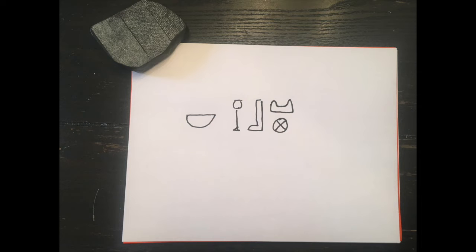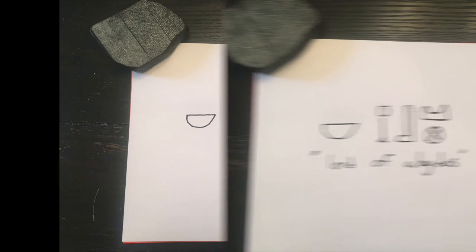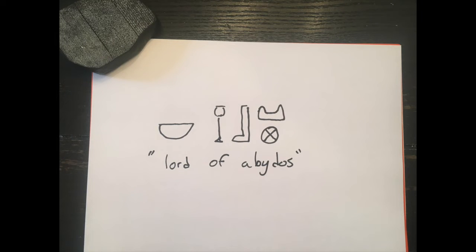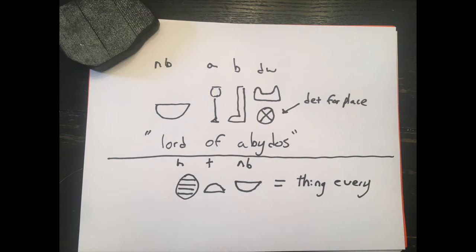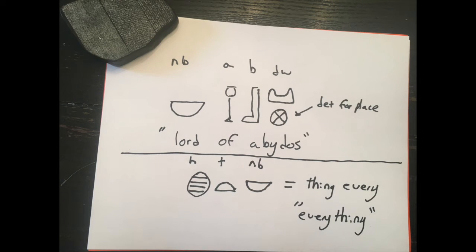In this case, it says 'lord of Abydos,' Abydos being a town in ancient Egypt. You know it's 'lord' because it comes first in the word or sentence. We can also tell that is a place because the determinative for a place is at the end — the circle with an X through it. You've probably seen this for railroad crossings; this is actually where it comes from. So Abydu, or Abydos, is a town — lord of Abydos. So then with khutnub, where nub comes at the end, this is going to mean 'every' or 'all.' It would literally translate to 'thing every,' but in English we reverse that to 'everything' or 'all things.'